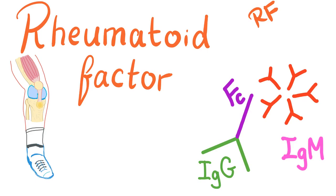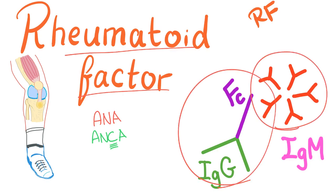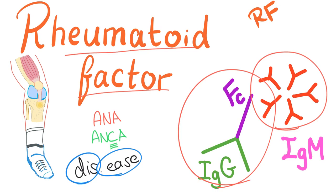Hey guys, it's your favorite medical channel Medicosis Perfectionalis. This is video number 12 in our series about rheumatology. In the previous video we talked about anti-neutrophilic cytoplasmic antibodies. Today we'll talk about rheumatoid factors. Remember: anti-nuclear antibodies were antibodies against the nucleus, anti-neutrophilic cytoplasmic antibodies were antibodies against the cytoplasm, and rheumatoid factor is an antibody against an antibody — like a dog chasing its tail.